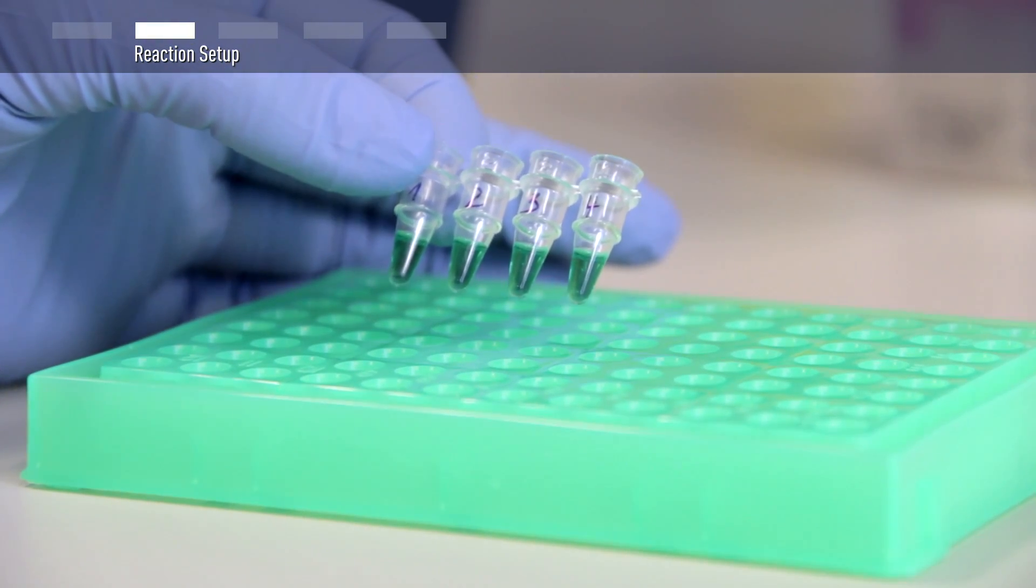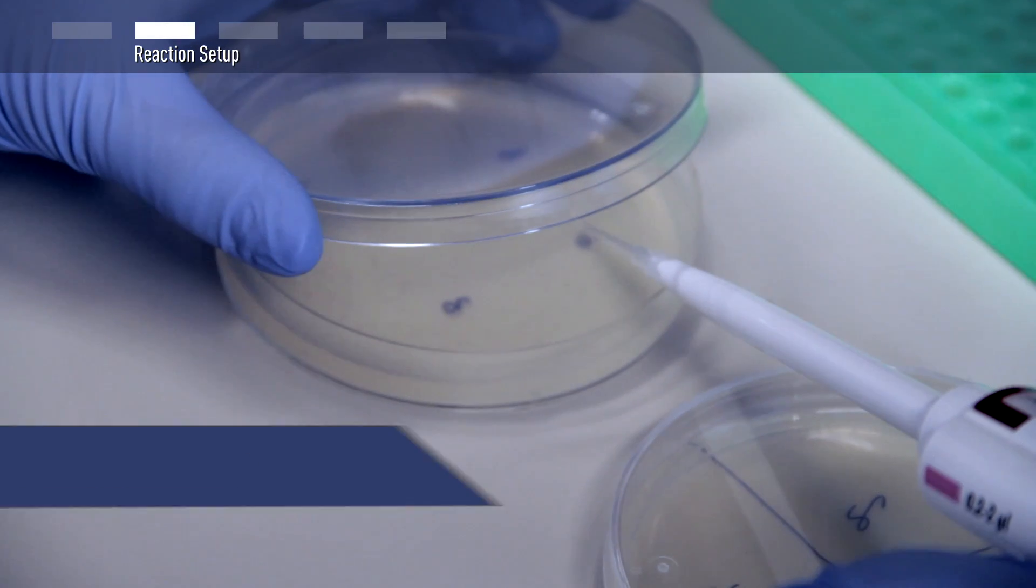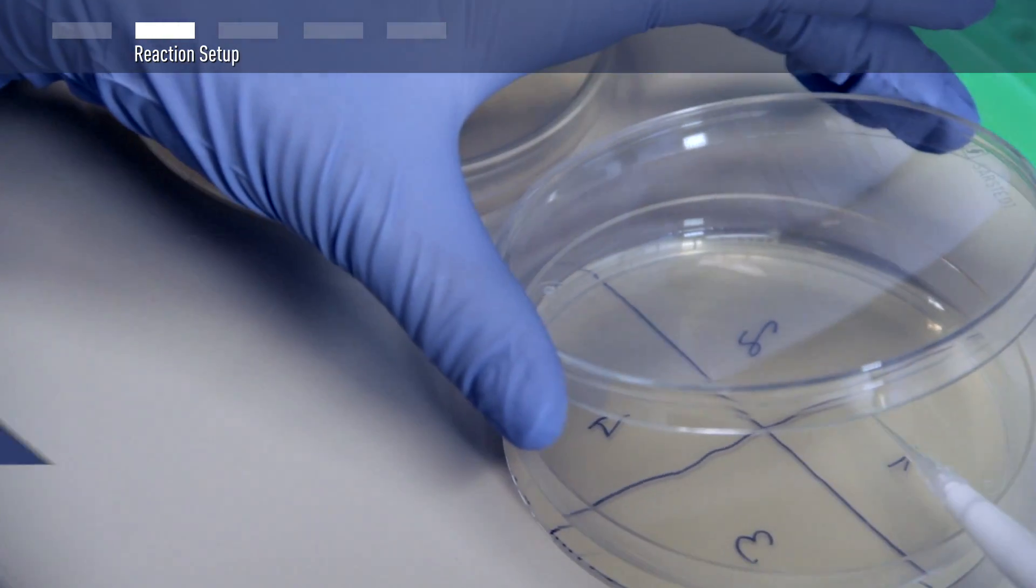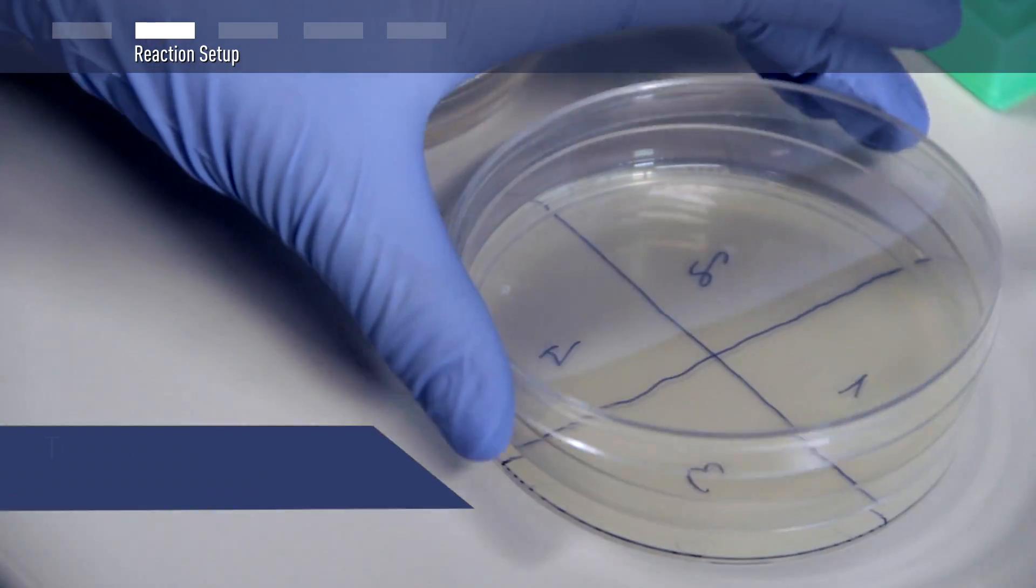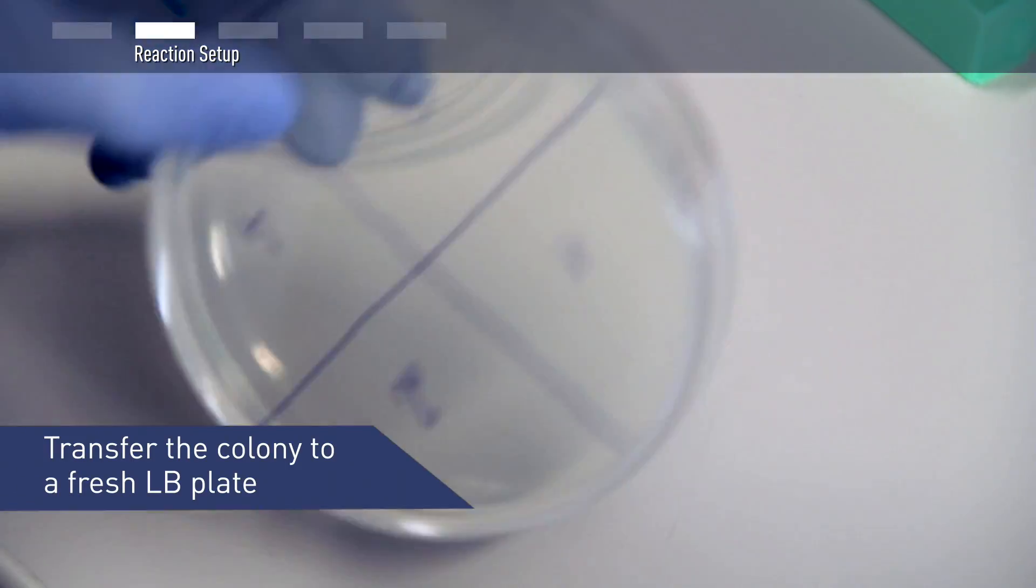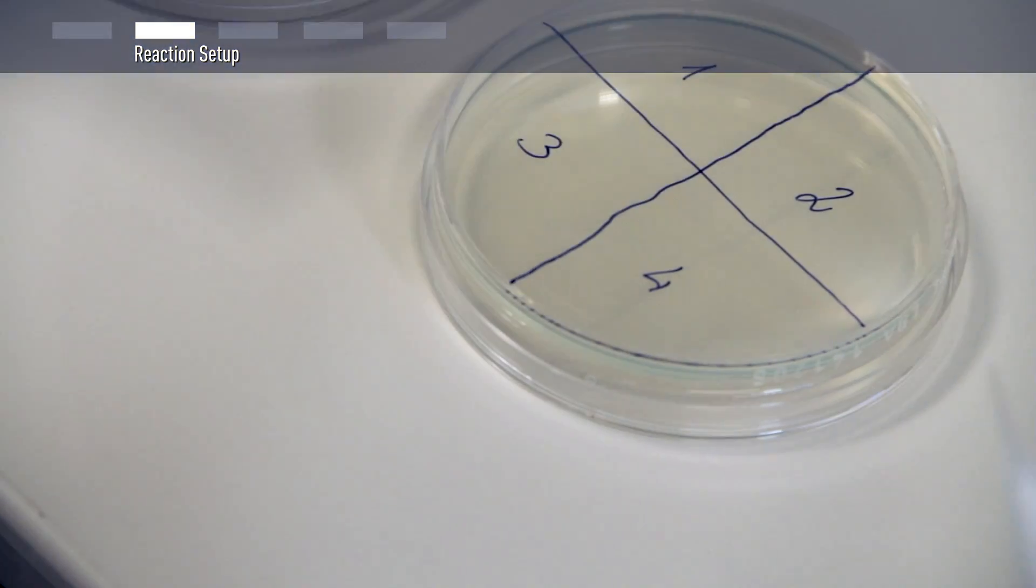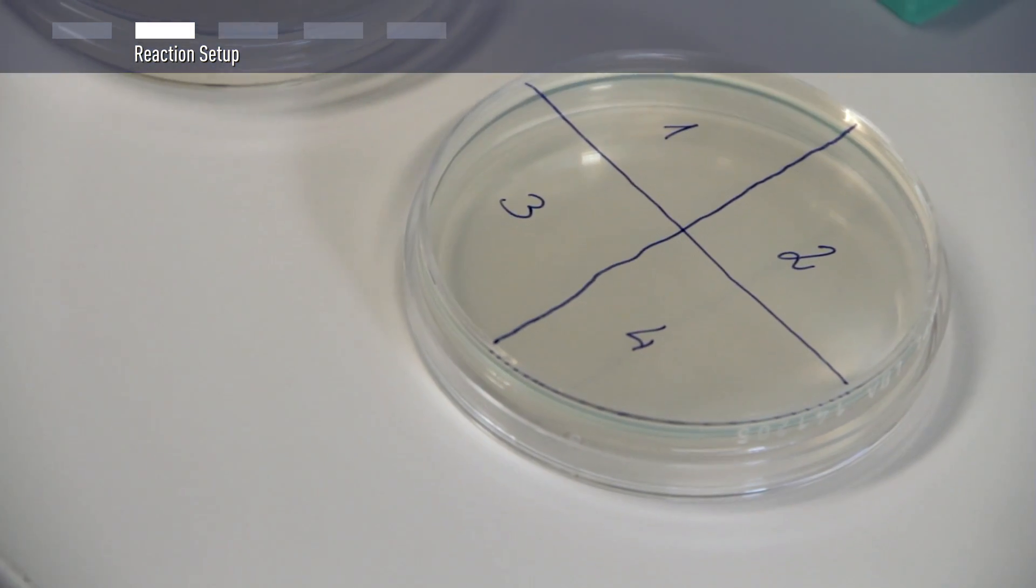To perform Colony PCR, swipe a well-isolated bacterial colony with a sterile pipette tip. To make a replicate of the colony, transfer it to a fresh LB plate with the tip. Make sure to properly label the LB plate so that the position of each colony can be easily identified.